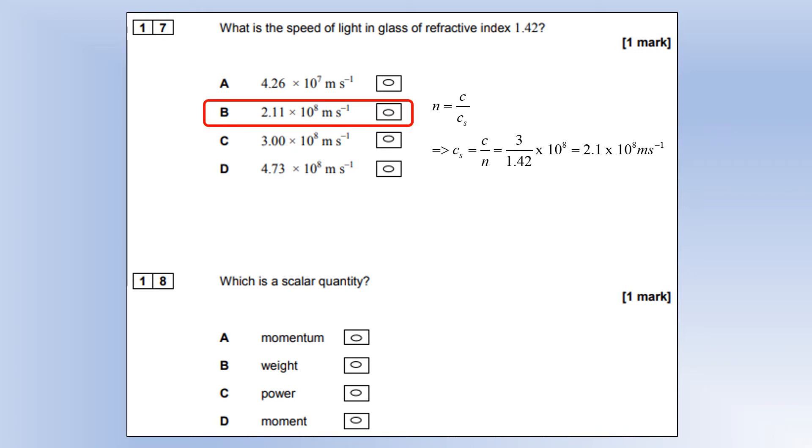Which is a scalar quantity? Momentum is a vector, it's a scalar times a vector, which is a vector. Weight is a force, which is a vector. Power is energy per second. Energy and time are both scalars, so that's clearly going to be a scalar quantity. And moment is a vector quantity because it has magnitude and direction, clockwise.